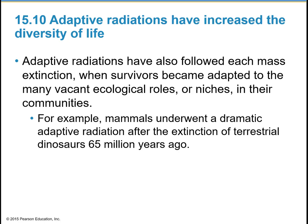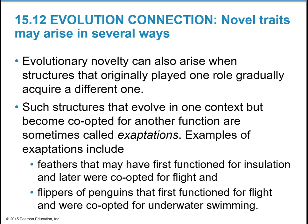Evolutionary novelty can arise when structures that originally played one role gradually acquire a different one. Such structures that evolve in one context but become co-opted for another function are called exaptations. Examples include feathers that first functioned for insulation but were later co-opted for flight, and the flippers of penguins that first functioned for flight and were co-opted for underwater swimming.